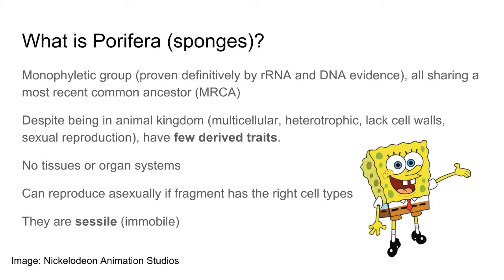Despite being in the animal kingdom — which humans are a part of — sponges have very few derived traits. Although they're multicellular, heterotrophic, lack cell walls, and sexually reproduce, they have very few other characteristics we'd expect in animals, such as cell specialization, tissues, organs, and organ systems like the musculoskeletal system. Sponges don't have those.